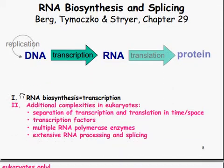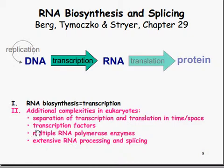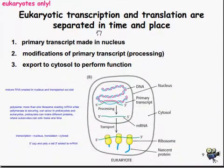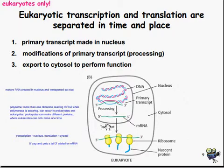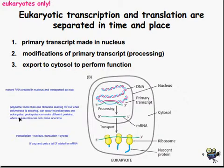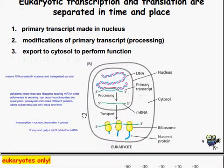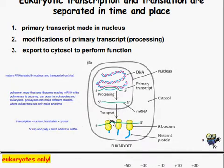That's basic RNA biosynthesis. Now let's get into the additional complexities in eukaryotic cells. In eukaryotes only, transcription and translation are separated in time and space. Primary transcripts are made in the nucleus, there are modifications of the primary transcript, and then they are exported to the cytosol to perform function. A polysome is more than one ribosome reading mRNA while translation is occurring — this can occur in both prokaryotes and eukaryotic cells. Prokaryotes can make different proteins, while eukaryotes can only make one type.